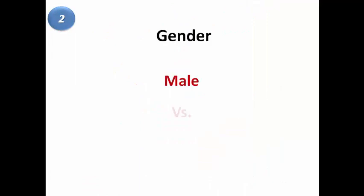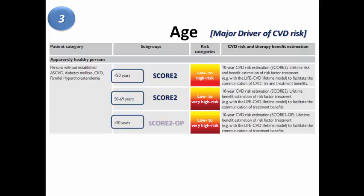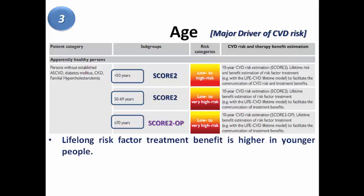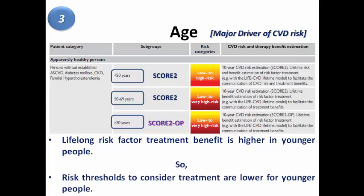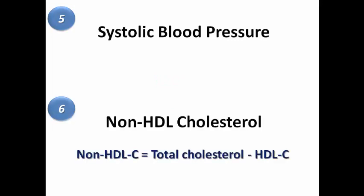The second parameter is gender — male or female. Third is age, which is the major driver of cardiovascular risk. For patients under 50 or between 50 and 69, we use the SCORE2 algorithm; for patients aged 70 or older, we use SCORE2-OP. Lifelong risk factor treatment is much more beneficial in younger populations because there is a longer life ahead, so the risk threshold to consider treatment is usually lower for younger people. Fourth, we check smoking status — smoker versus non-smoker. Fifth is systolic blood pressure, and sixth is non-HDL cholesterol, which equals total cholesterol minus HDL cholesterol.